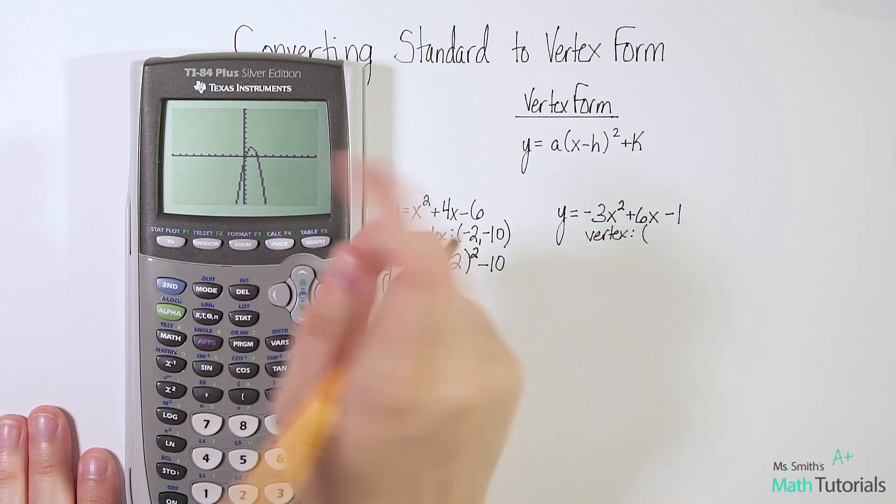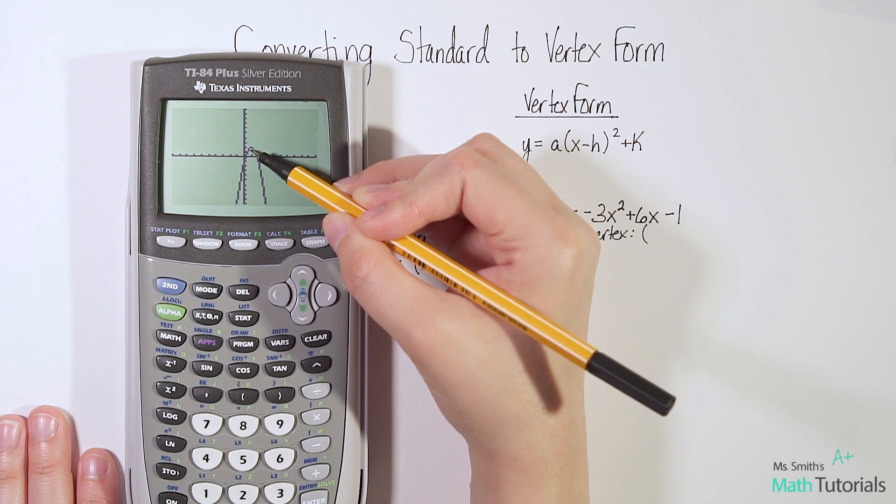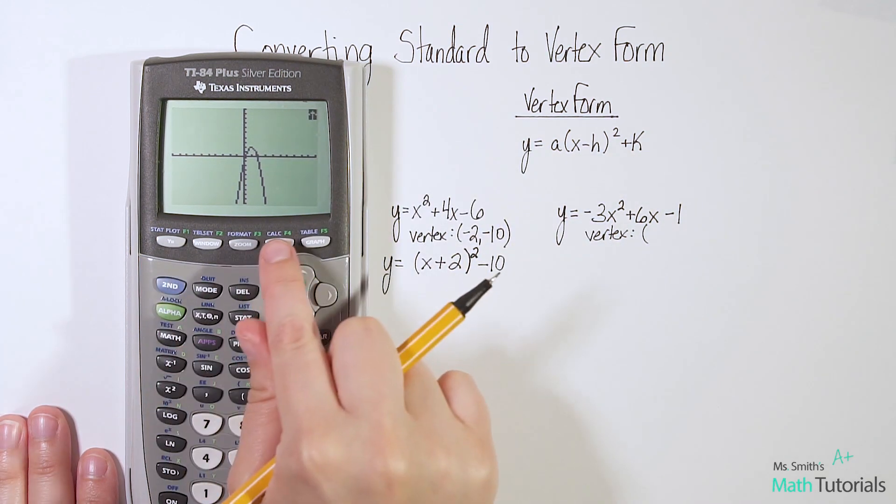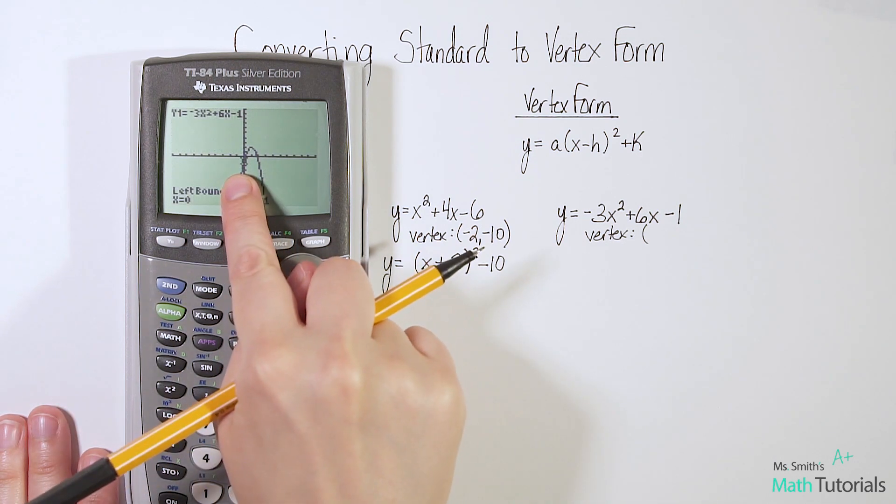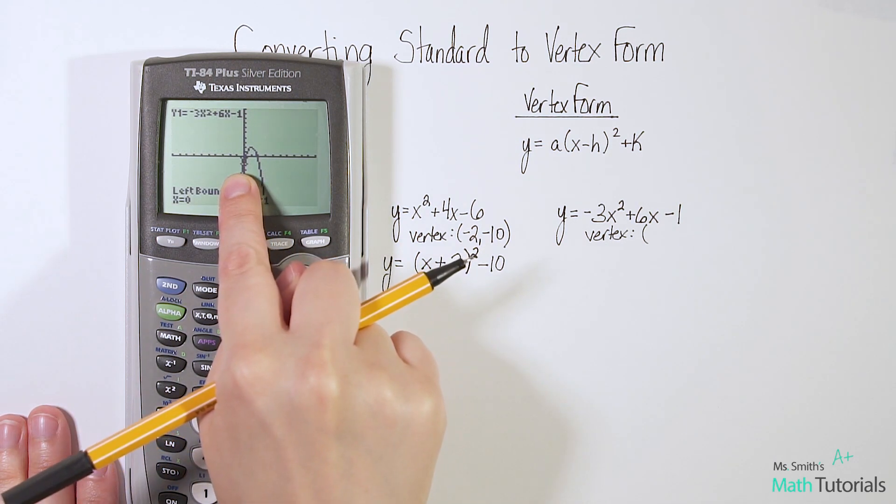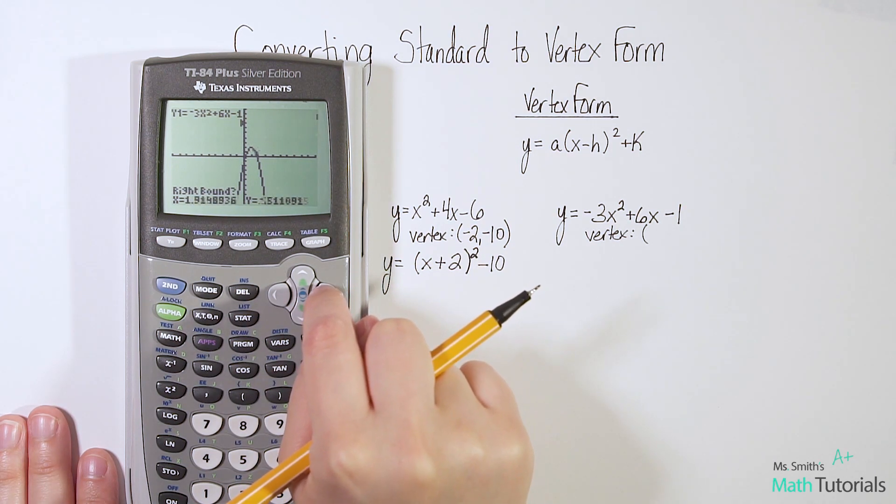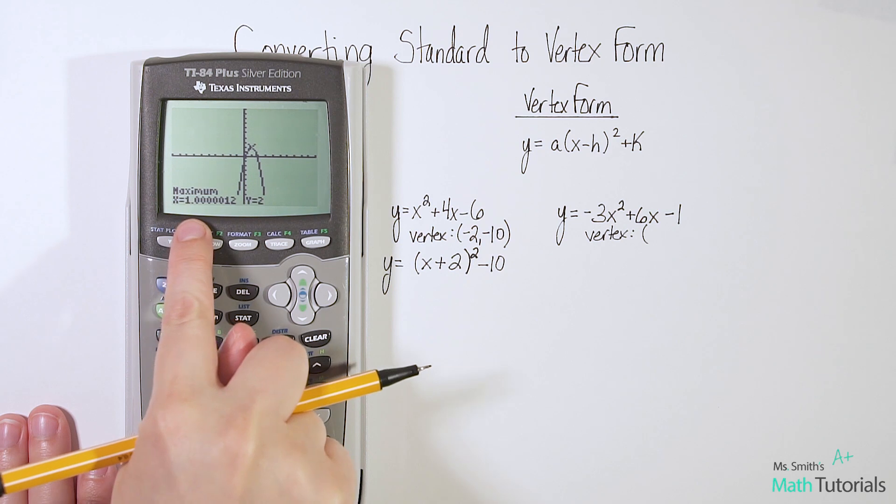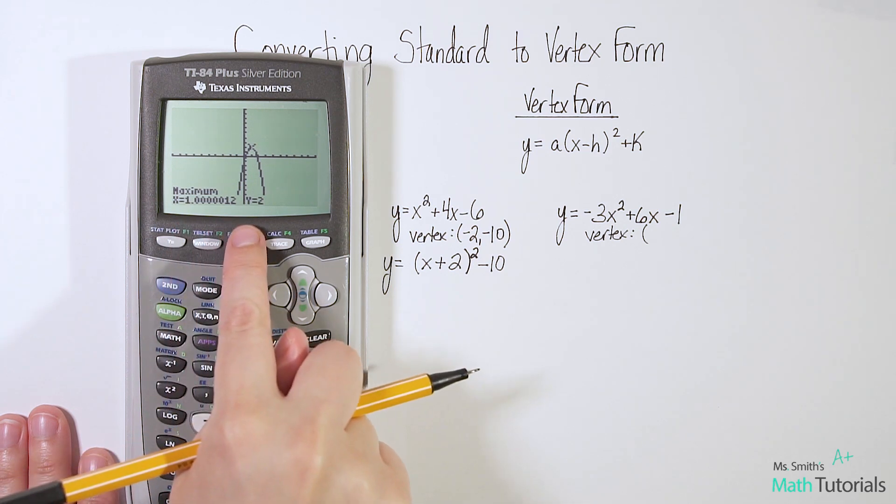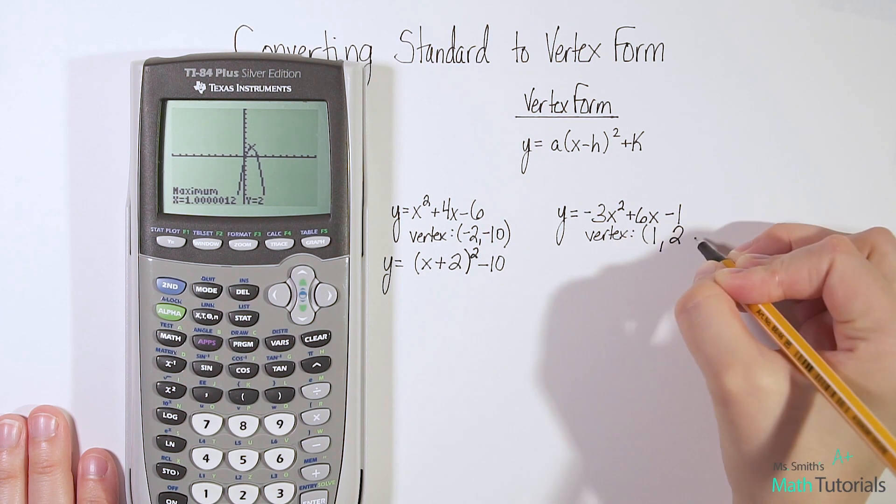Notice this time it's an upside down u. That means our vertex is a maximum, not a minimum. This time when we go to second trace, we're going to hit max 4. And notice my spaceship is already a little bit left bound already, so I can go ahead and lock that in. Move to the center. Move a little bit right bound. Lock that in. And then it should tell us our vertex. Now this says 1.000012. We would just round that to 1. Positive 1, positive 2.